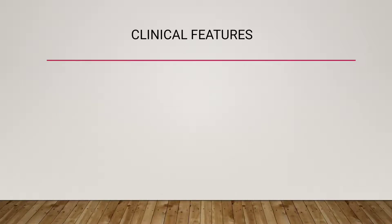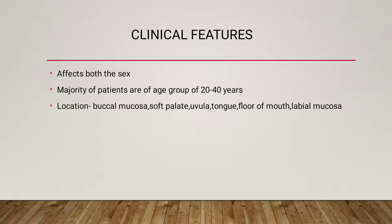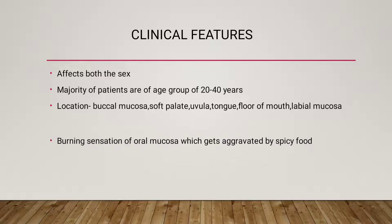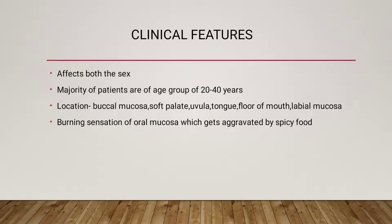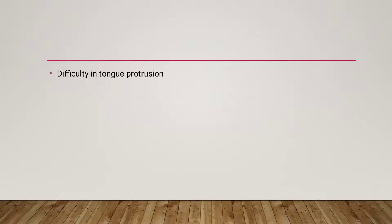Now, what are the clinical features of OSMF? OSMF can affect both sexes — male and female. It occurs basically in the age group between 20 to 40 years. Location: it is mostly present on the buccal mucosa, soft palate, uvula, tongue, floor of mouth, and labial mucosa. There is burning sensation of the oral mucosa which gets aggravated by eating spicy food. There is hypersalivation or dryness of mouth, stiffness of oral mucosa, and reduced mouth opening.